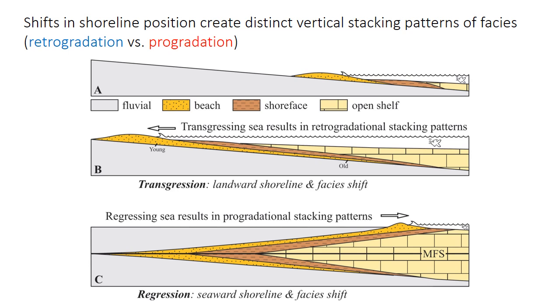Regression and transgression refer to shifts in the physical location of the shoreline. So that shoreline trajectory leads to vertical stacking patterns of facies, due to Walther's Law. Transgression of the shoreline leads to a retrogradational stacking pattern. Retrogradation is when deeper water facies, or more distal facies, overlie more proximal, or more landward or shoreward facies, shallow water facies.